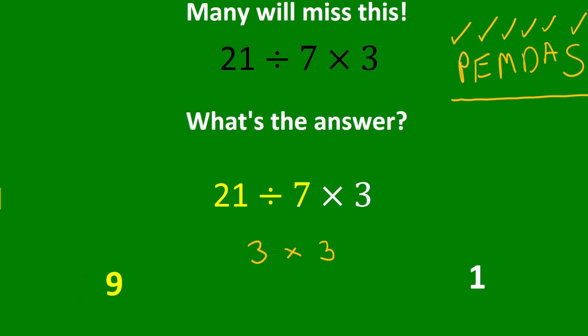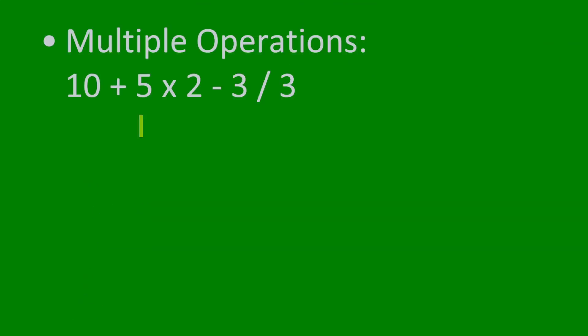Now let's do a few other examples of order of operations. Here we must take care of multiplication and division before addition and subtraction. So we get 10 plus 10 minus 1.